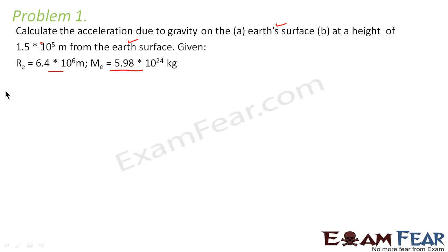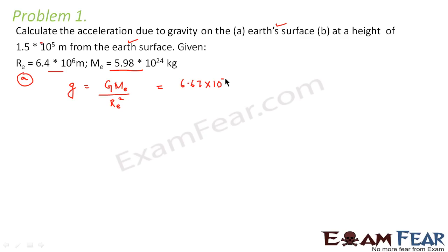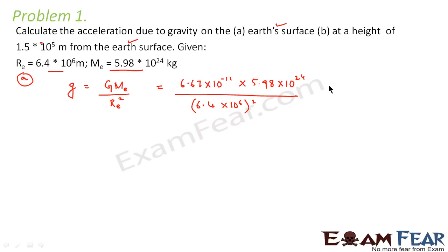Let us first solve the first part — calculate the acceleration due to gravity on the earth's surface. The formula is g = G·Mₑ / Rₑ². The value of G is 6.67 × 10⁻¹¹, mass of the earth is 5.98 × 10²⁴, and Rₑ is 6.4 × 10⁶ meters. Calculating this, we get g = 9.74 m/s². This is the acceleration due to gravity on the surface of the earth.